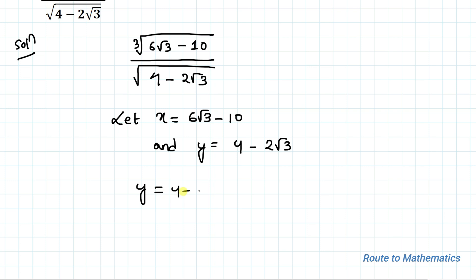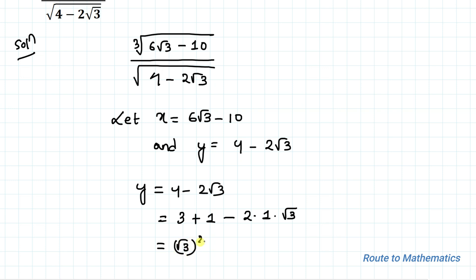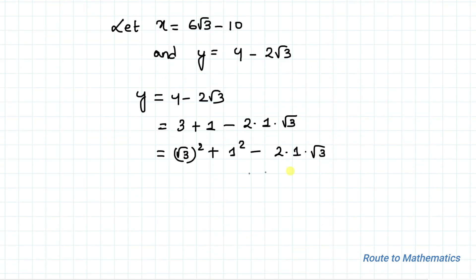Now let's start simplifying the value of y. We have y = 4 - 2√3. We can write 4 as 3 + 1, and 2√3 as 2 × 1 × √3. So we can write this as (√3)² + 1² - 2 × 1 × √3. By applying the algebraic identity a minus b whole square equals a² + b² - 2ab...